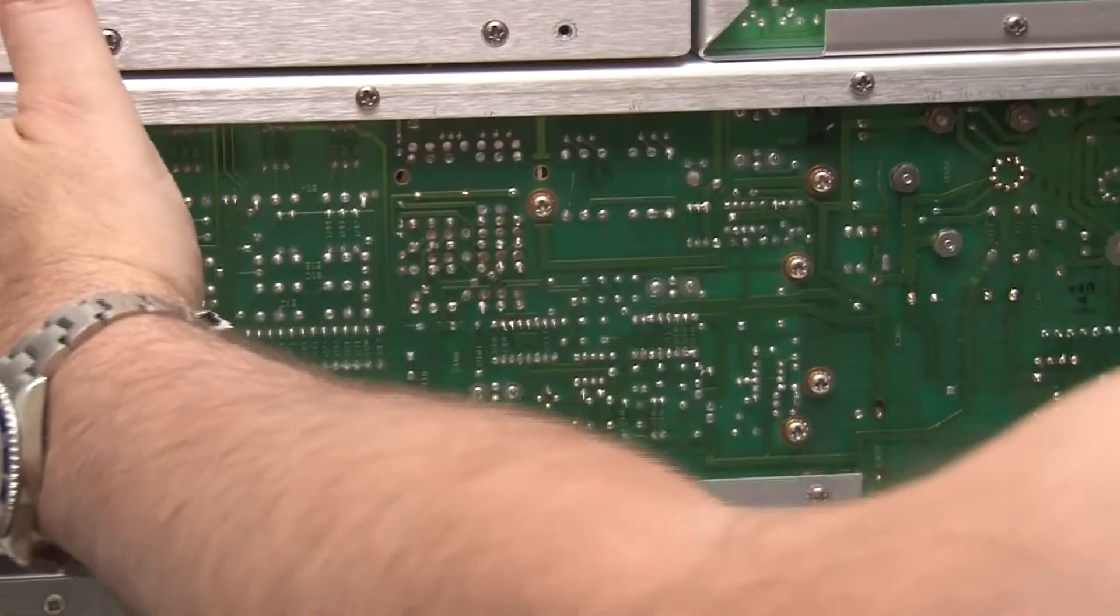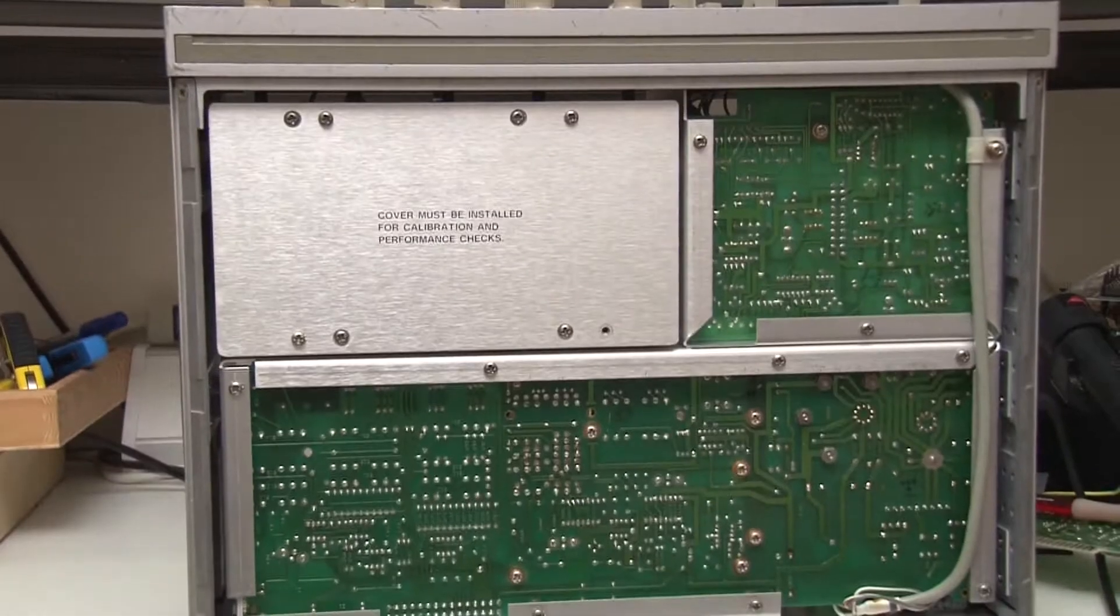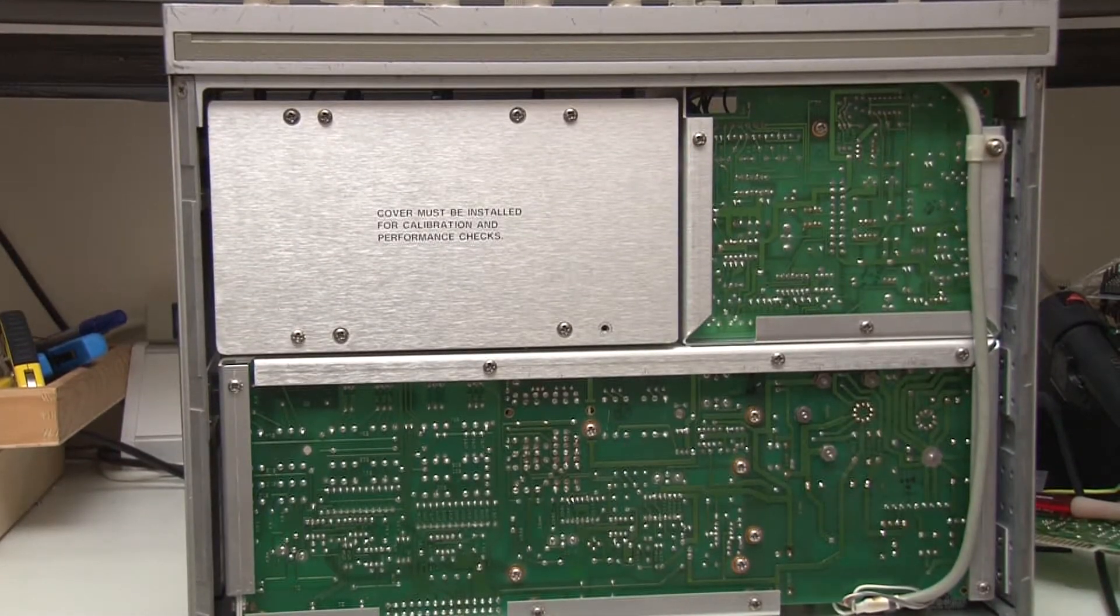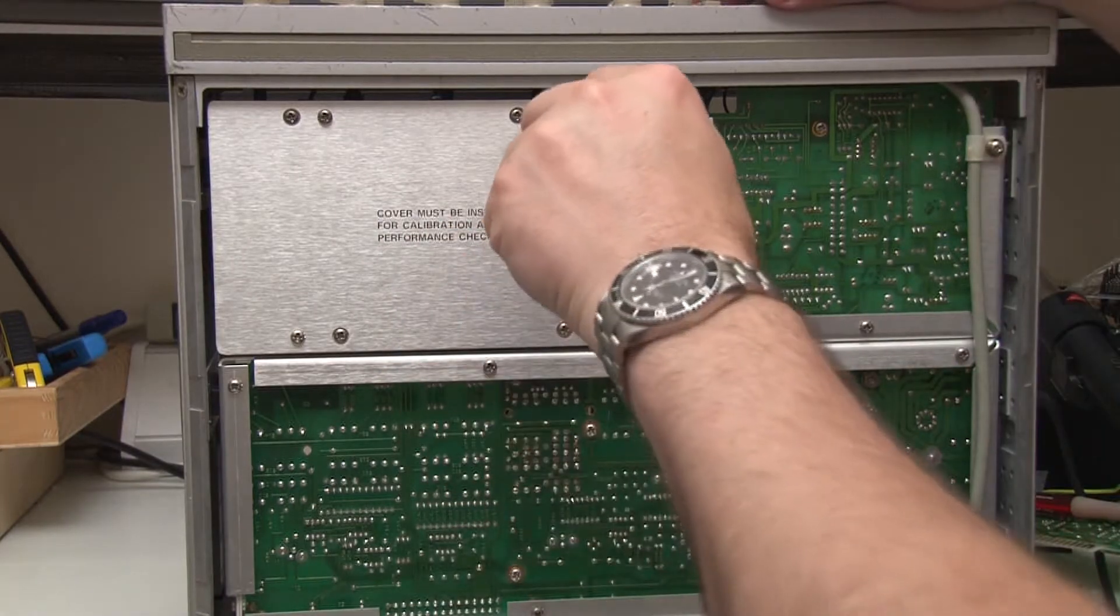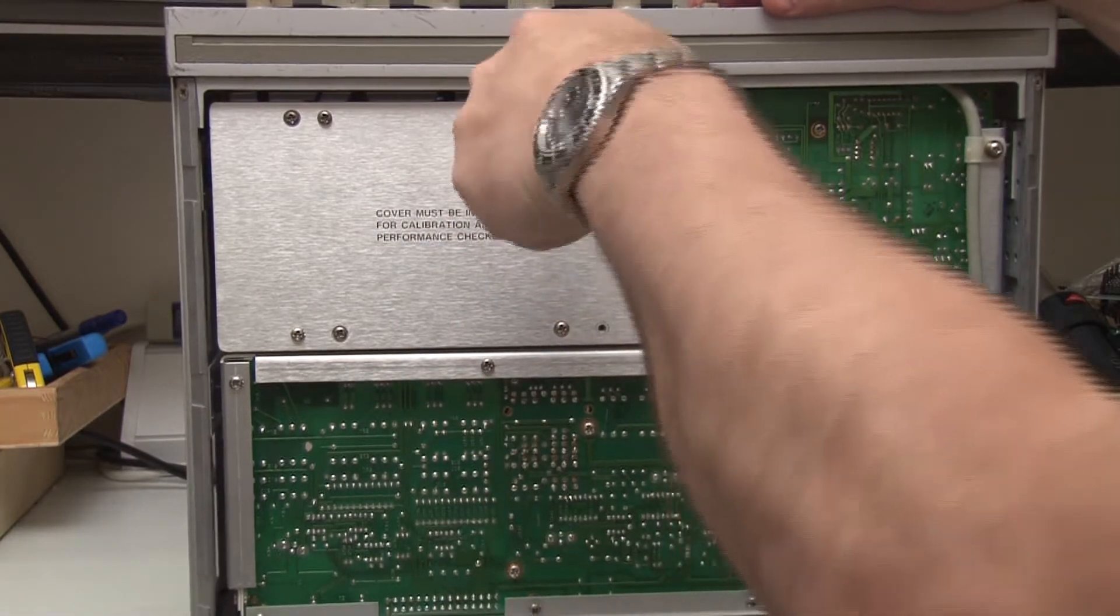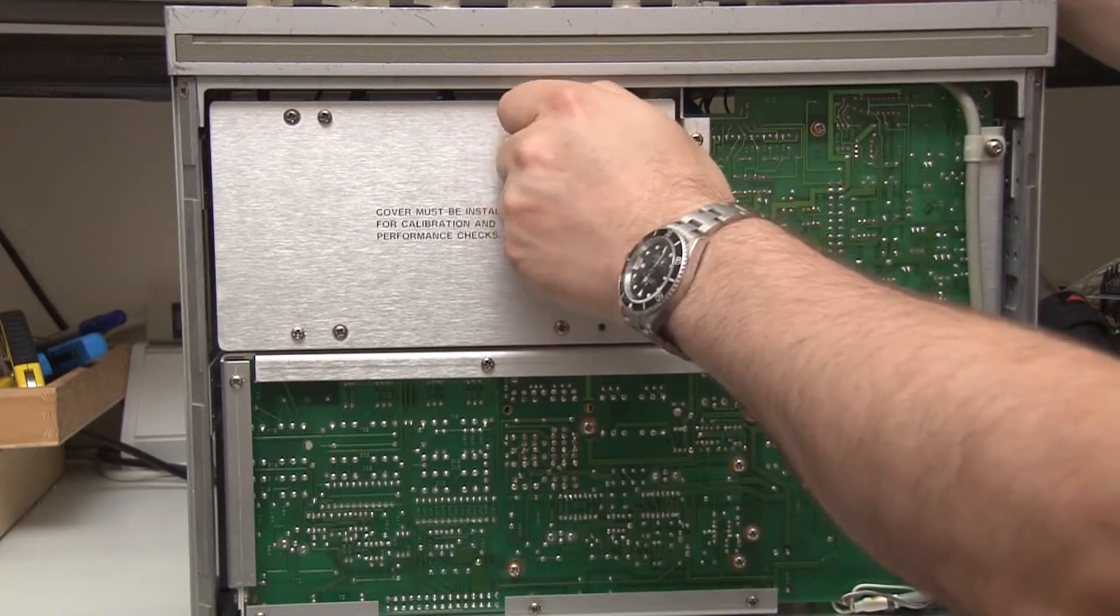Let's see if there's anything interesting in the back of this thing. So this cover is obviously important for calibration checks, performance and calibration checks, because it looks like it's been apart before and there's a screw missing there. Didn't notice that before.